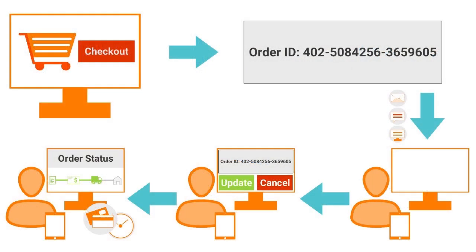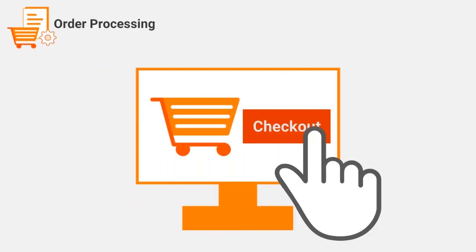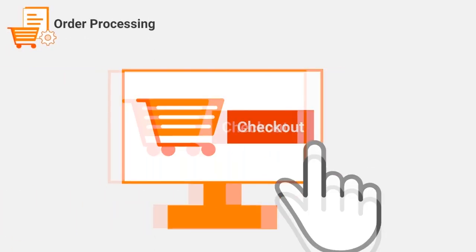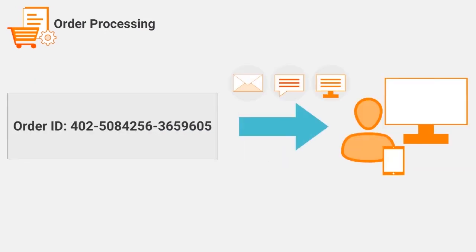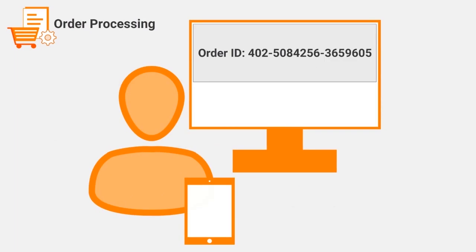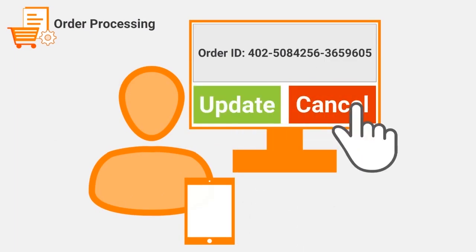This video will demonstrate how to process a call in an order processing scenario using cloud application integration. Order processing involves placing an order, which will generate an order ID. Once an order ID is generated and communicated to the user, the user can update or cancel the order using this order ID.